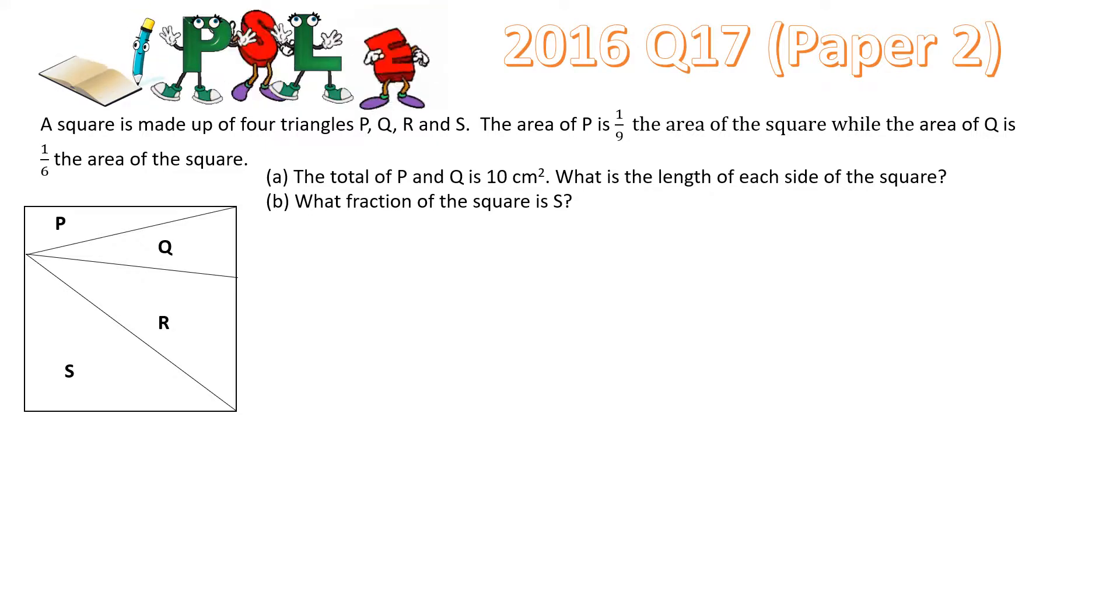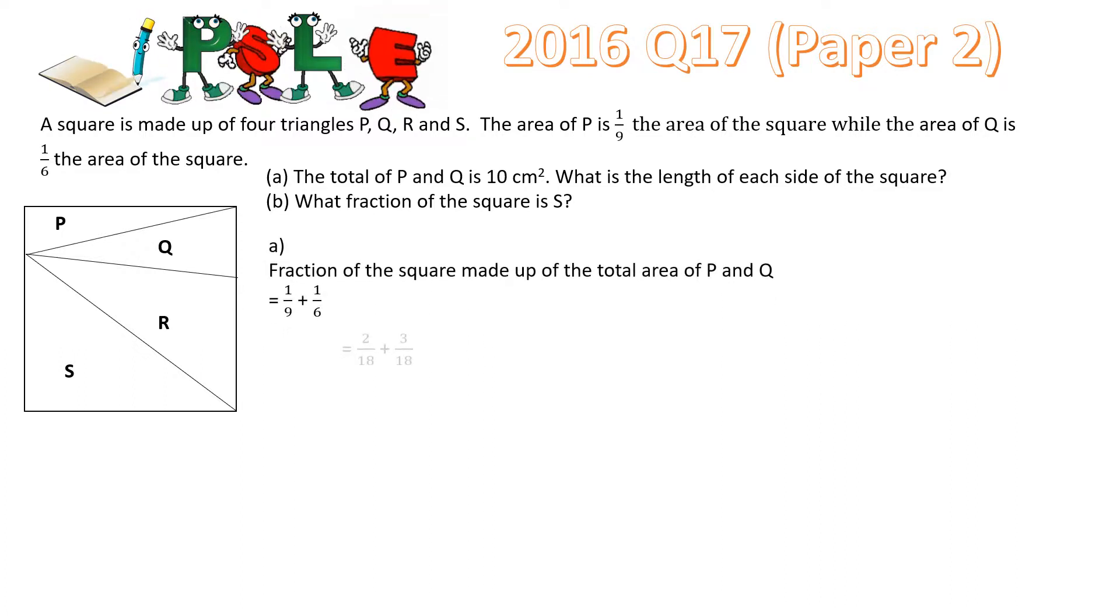B. What fraction of the square is S? First find the fraction of the square that made up of P and Q combined. That is 1/9 plus 1/6 that gives us 5 over 18.